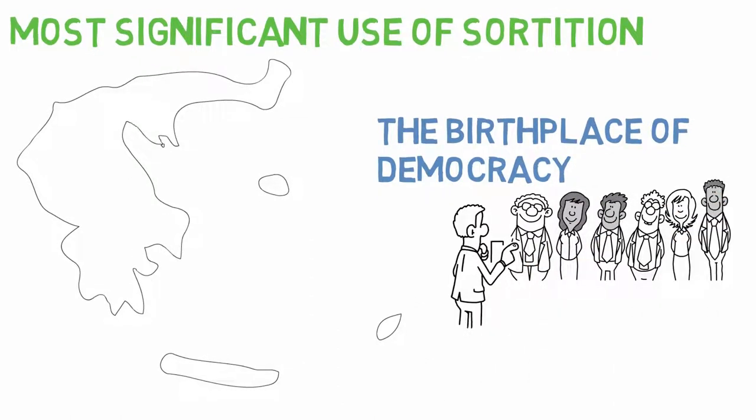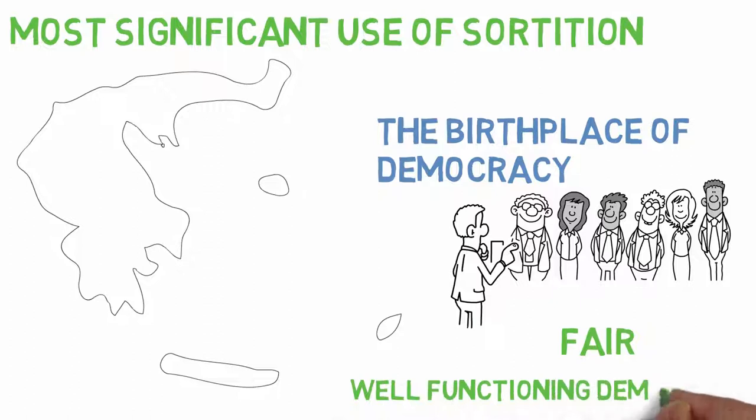There, they viewed sortition as a critical tool to ensure a fair, well-functioning democracy. And it seems like they might have been on to something.